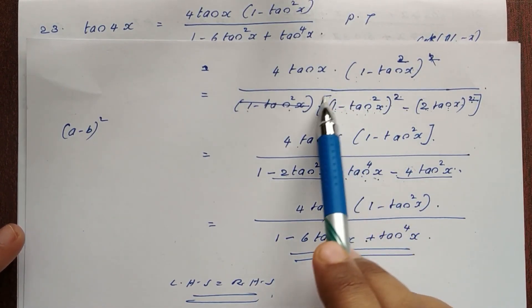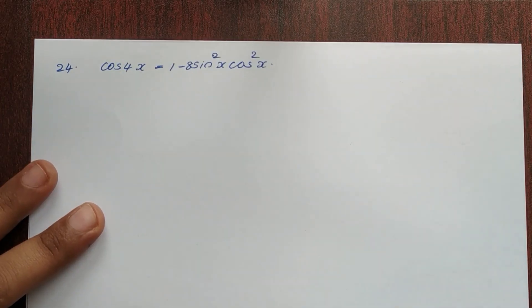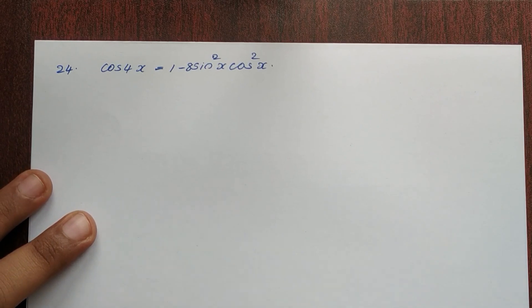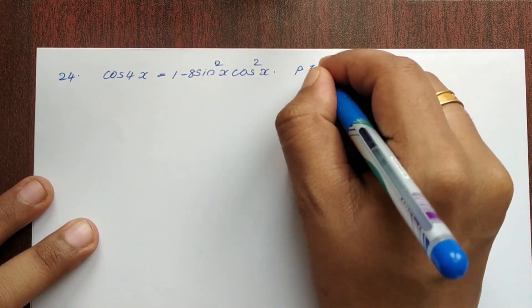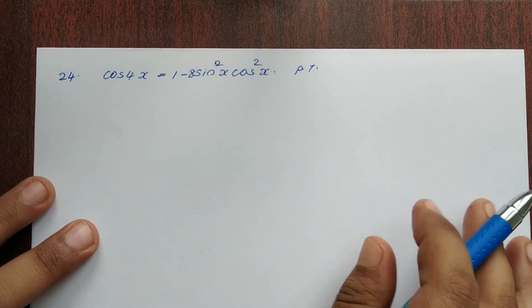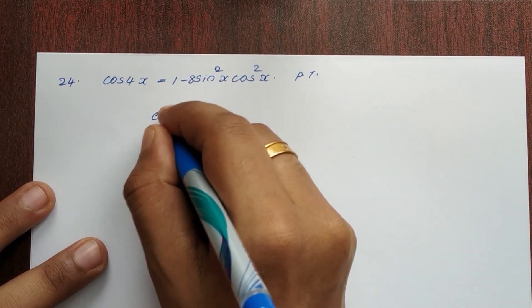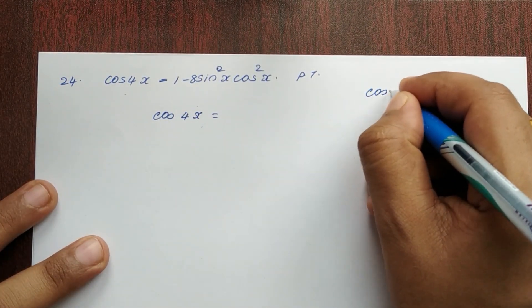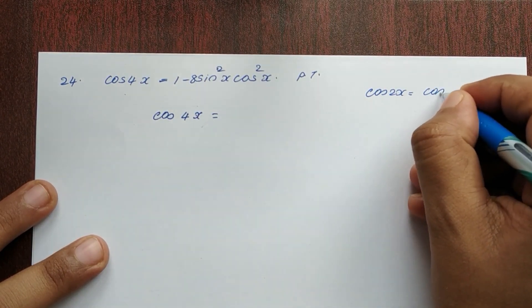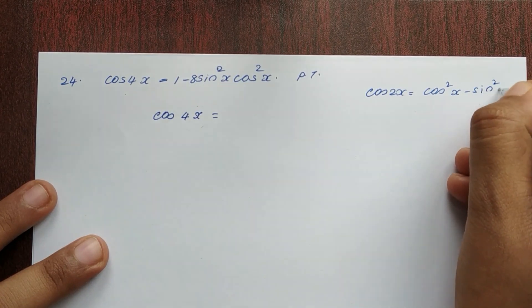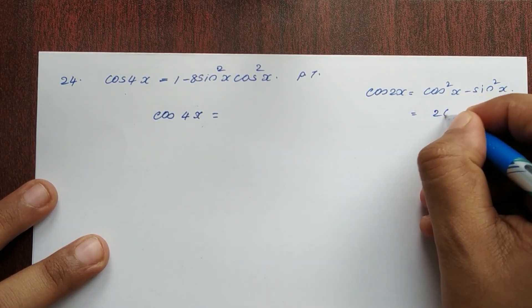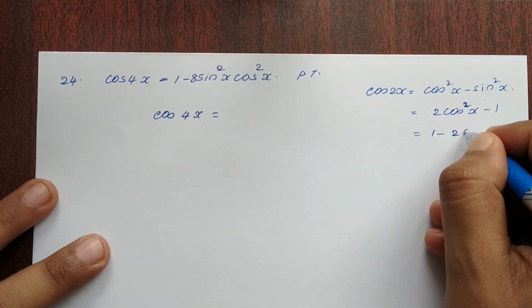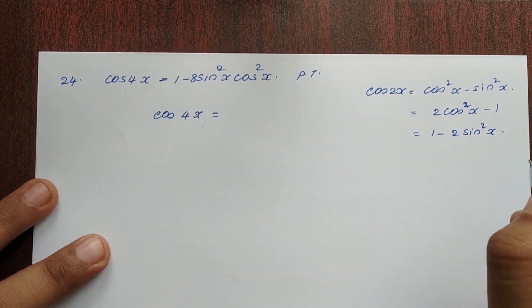Now let's expand the next problem: cos 4x is equal to 1 minus 8 sin square x into cos square x. Let me prove that. So cos 4x equals cos 2x minus sin 2x, which is 2 cos square x minus 1, and also 1 minus 2 sin square x.